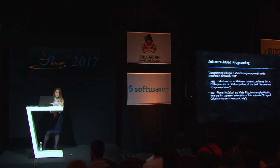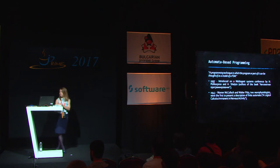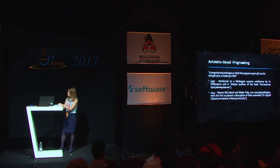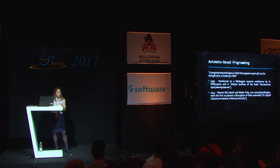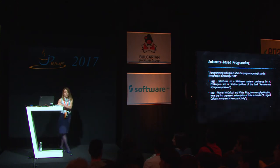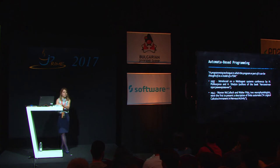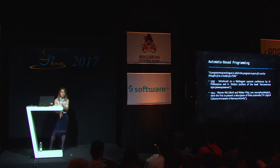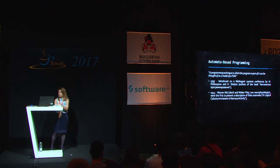Finite state machines have existed since the previous century. Automata theory is a branch of computer science, and it's interesting that the first people to consider abstract machines — including finite state machines — were biologists, physiologists, mathematicians, engineers, and some of the earliest computer scientists. What they had in common was an interest in modeling the human thought process. The first people who tried to define state machines in an article were Warren McCulloch and Walter Pitts, two neurophysiologists, in 1943.